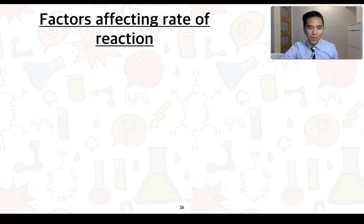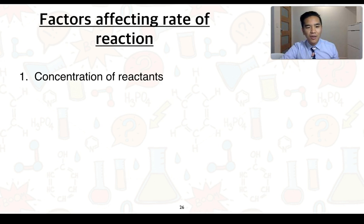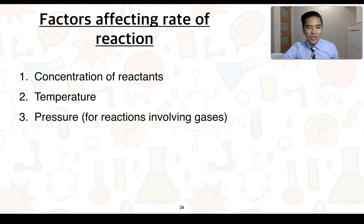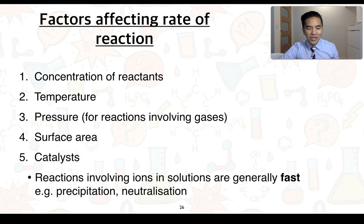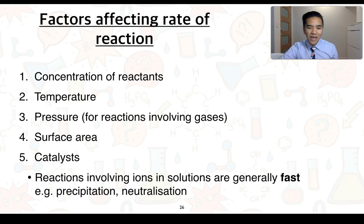Factors that affect the rate of a reaction include concentration of reactants, temperature, pressure for reactions involving gases, surface area, and catalysts. One more point to note: reactions that involve ions in solution generally occur fast and aren't really going to be affected by these factors. Examples include precipitation reactions and acid-base neutralisations.